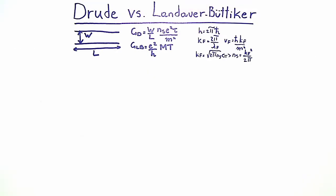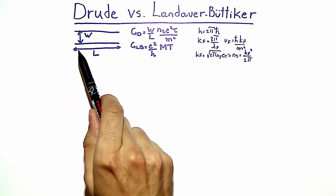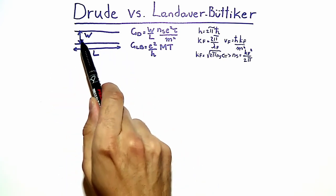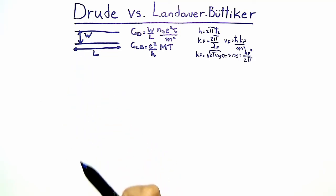Hello and welcome to the video solution of the exercise problem Drude versus Landauer-Büttiker. In this problem we consider a wire of length L and width W in a two-dimensional electron system.